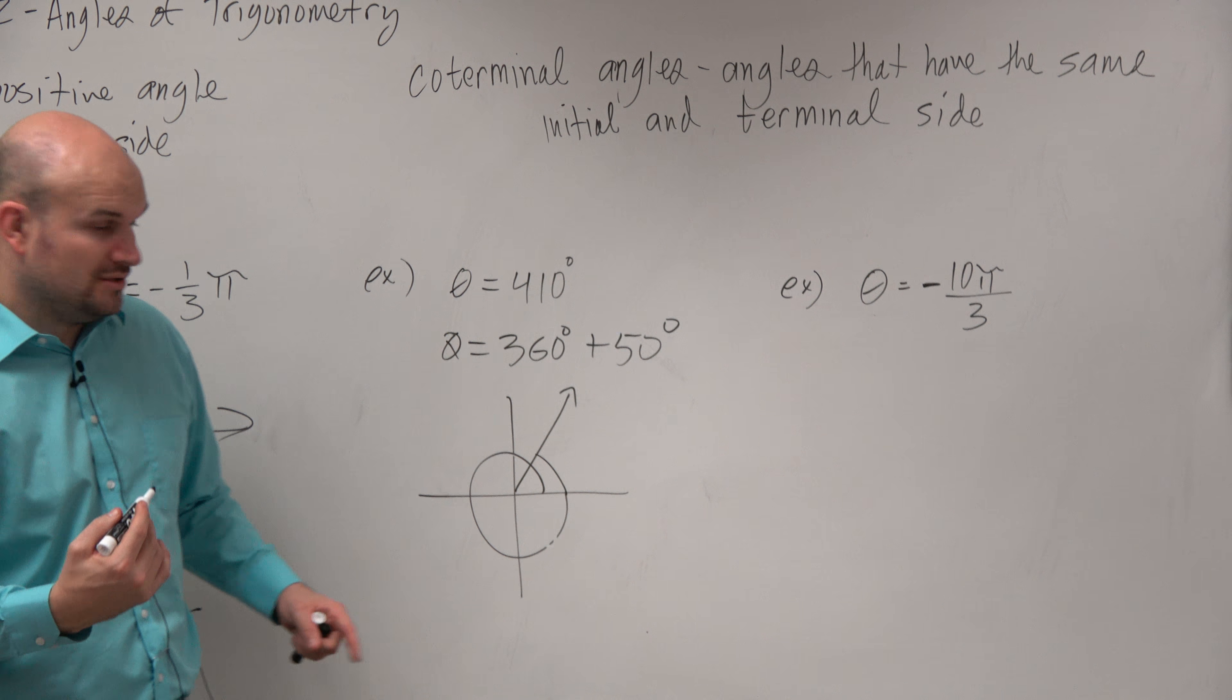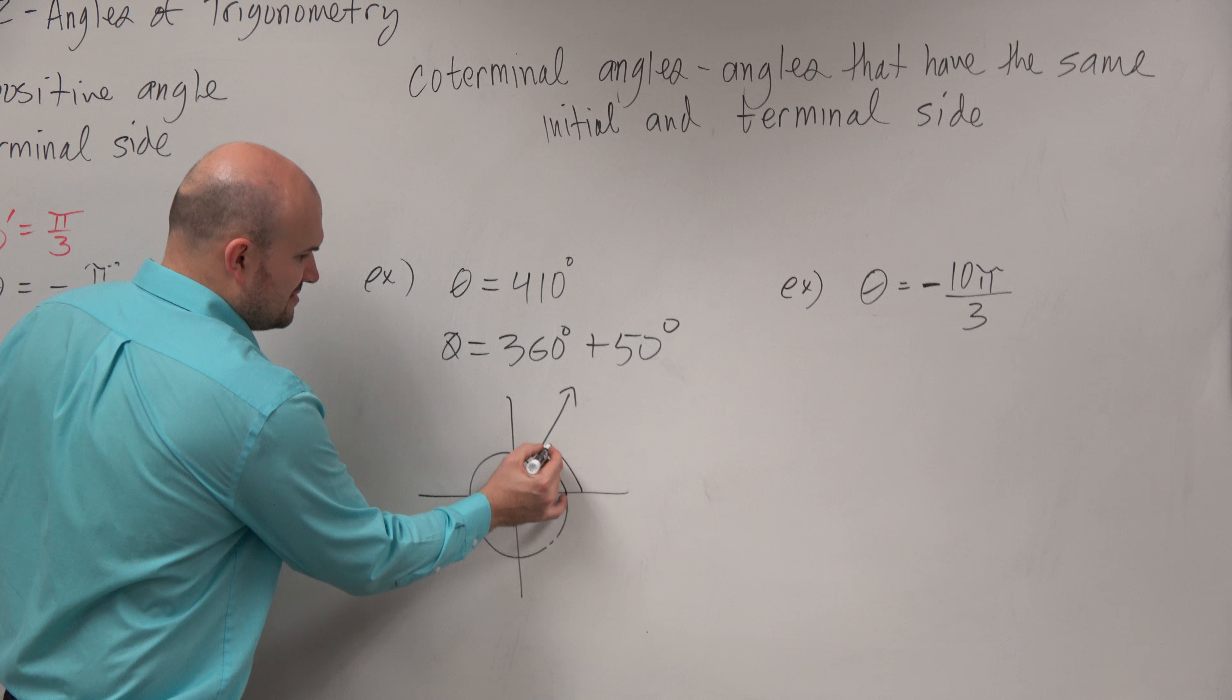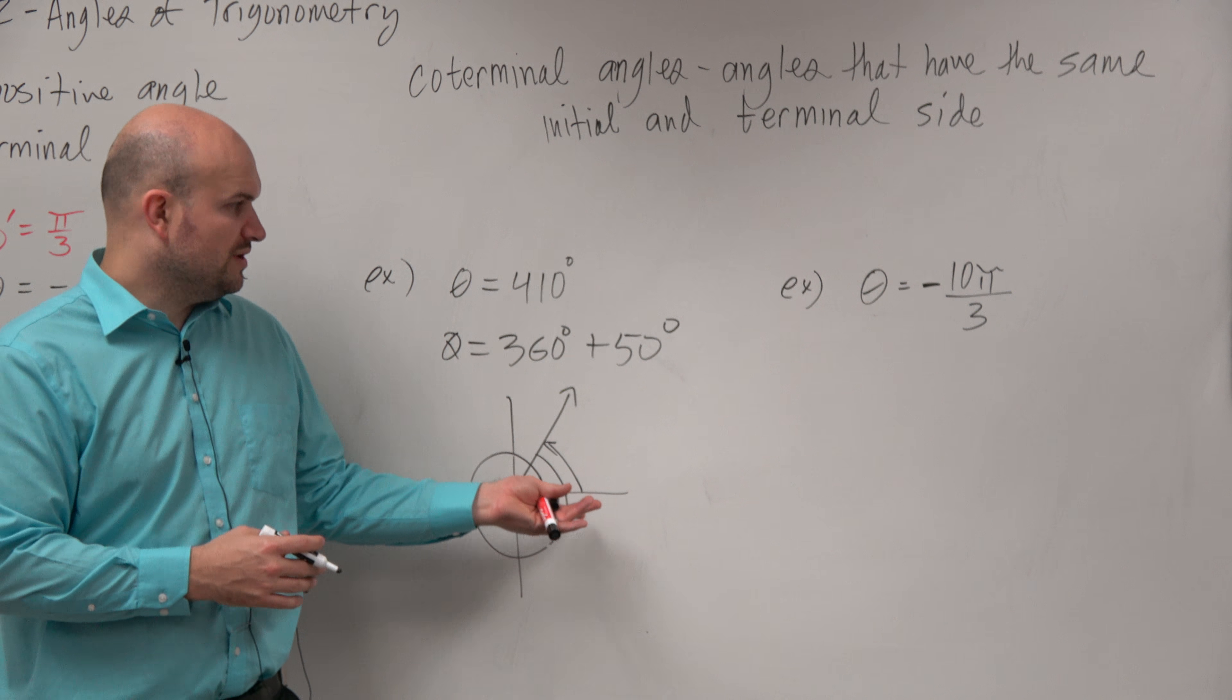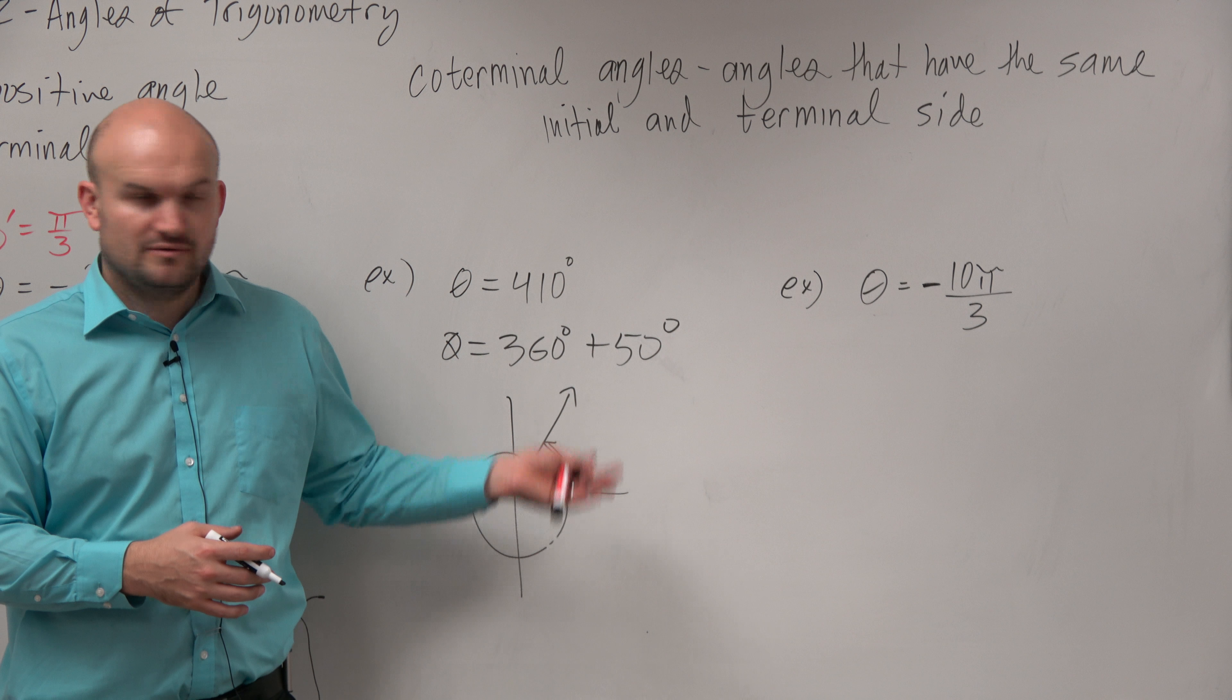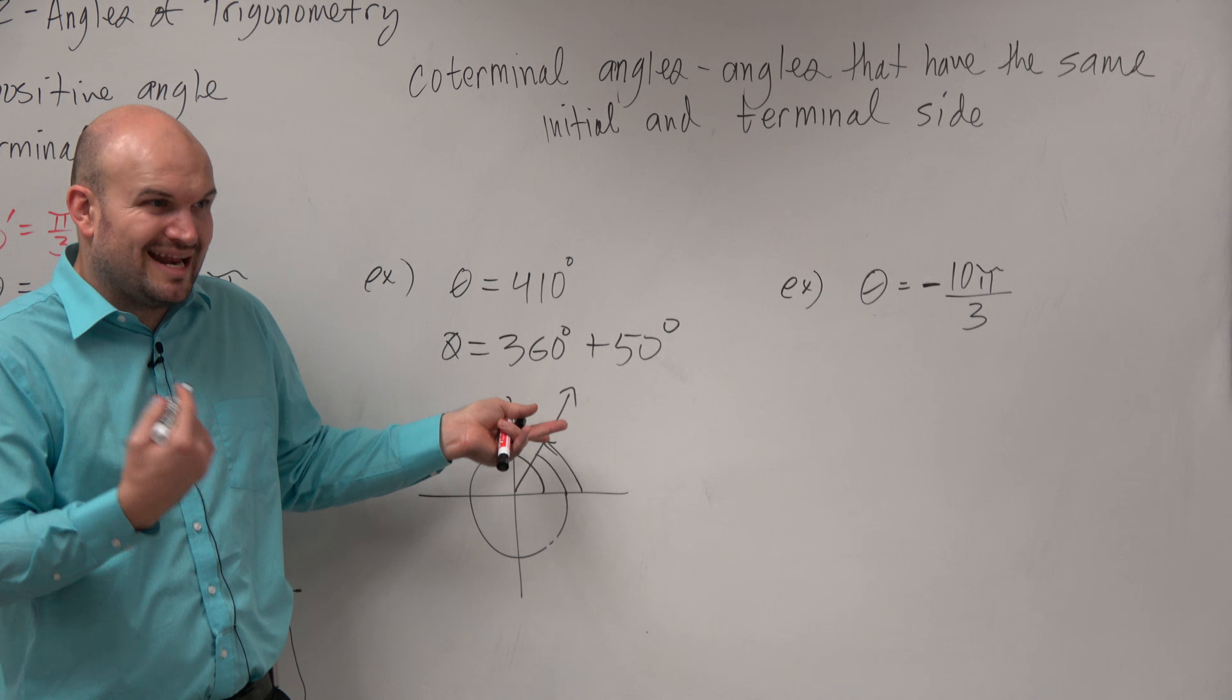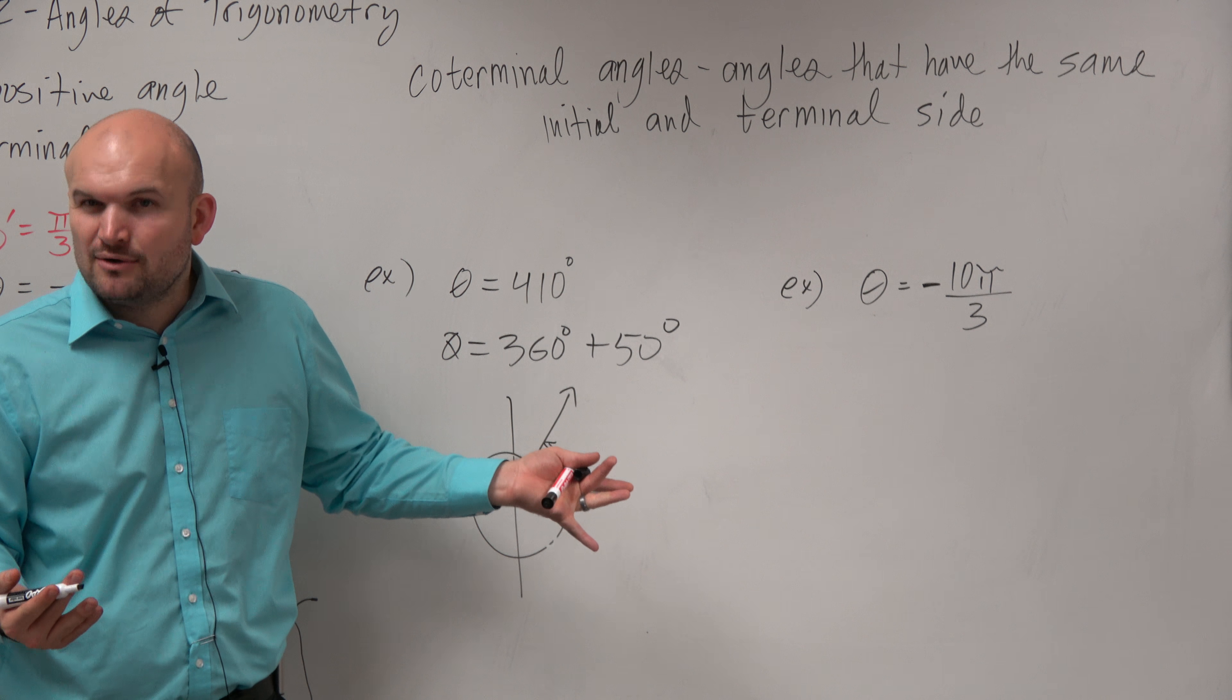So if I want to find a coterminal angle, I could have just done this, right? Which was really just what? 50 degrees. 50 degrees, right? So doing the extra 360, which we call an extra revolution, was kind of like a waste of time.